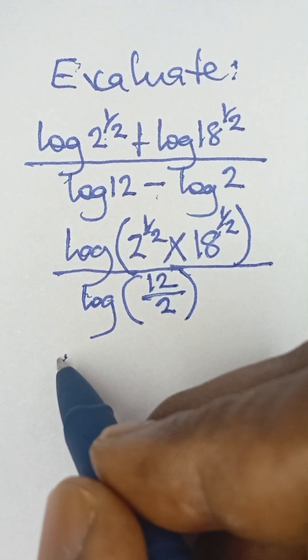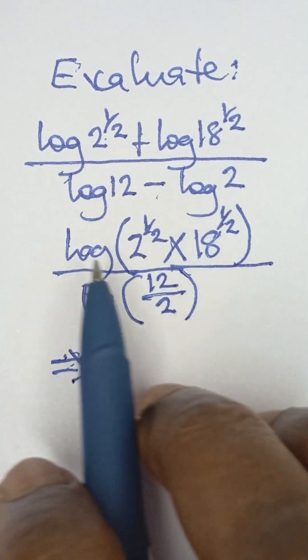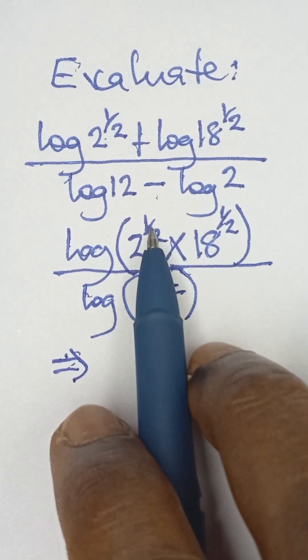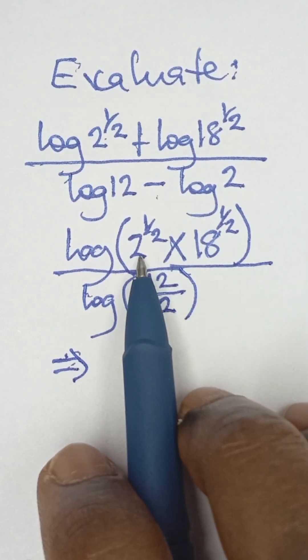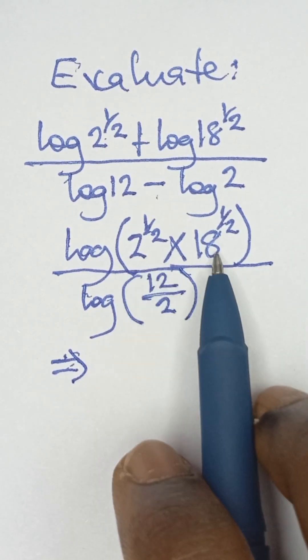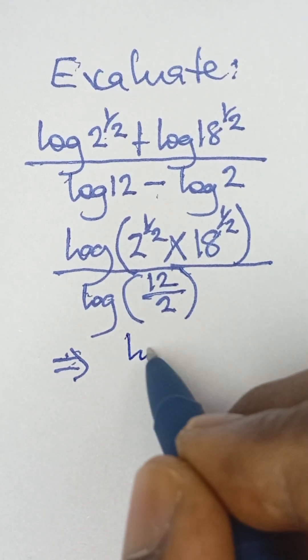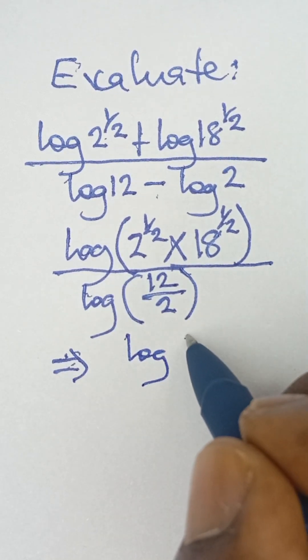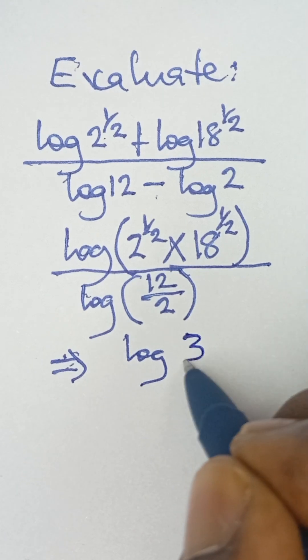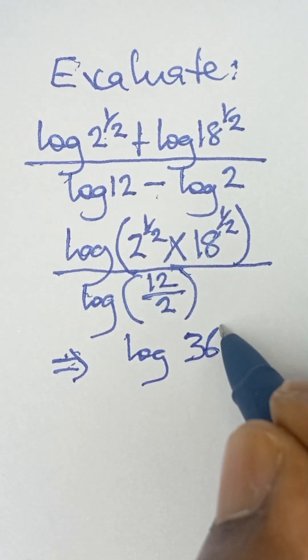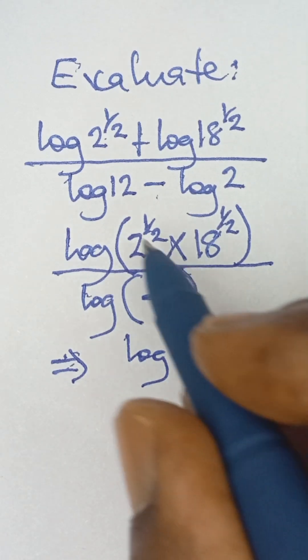And that will be equal to, now these two have the same powers. So since they have the same powers, we can simply multiply the numbers together, the basis. So it becomes log 18 times 2 is 36. That is why we multiply the basis, 18 times 2 is 36, and then raised to the power of the half.